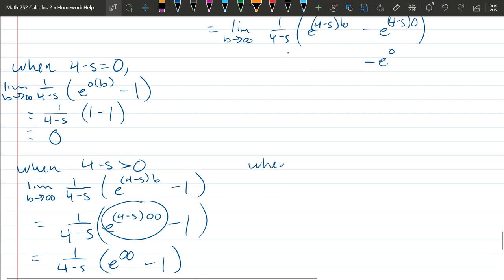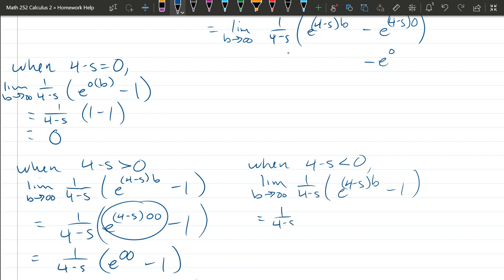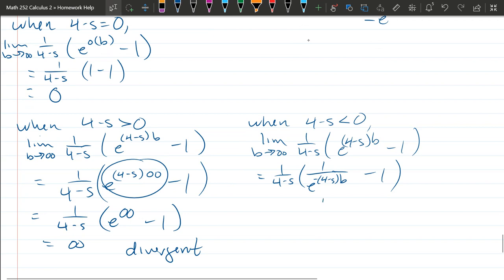All right, last case. When 4 minus s is less than 0, what do we get? Limit B approaches infinity, 1 over 4 minus s, e to the (4 minus s) to the B minus 1. All right, so this is negative. 4 minus s is negative, so I'm going to write it on the denominator by taking it as a reciprocal. Now the reciprocal, this negative 4 minus s is positive, so it's e to a positive value times infinity, which is e to the infinity.